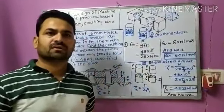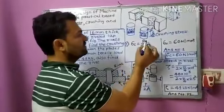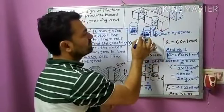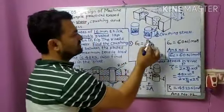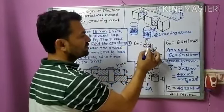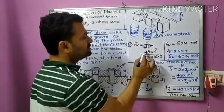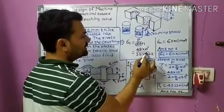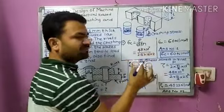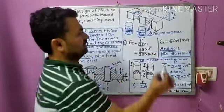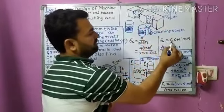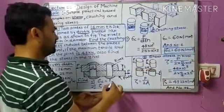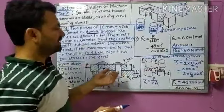The crushing stress formula is: σc = P / (d × t × n). Substituting values: σc = (48 × 10³) / (25 × 16 × 2). After calculation, the crushing stress is 60 N/mm². This is answer number one — the crushing stress induced in the plate or rivet is 60 N/mm².